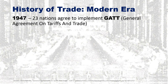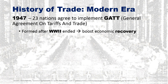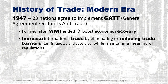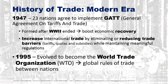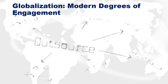In 1947, 23 nations agreed to implement GATT — the General Agreement on Tariffs and Trade — with the goal of boosting economies after World War Two, which had decimated industries. It was meant to increase international trade by reducing or eliminating trade barriers like tariffs, quotas, and subsidies, while having meaningful rules people could follow. In 1995, the World Trade Organization was established as the institution that now governs and determines the rules of trade between nations.